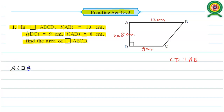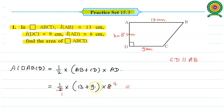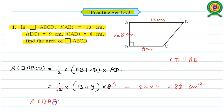So we may have: area of trapezium ABCD equals half times sum of its parallel sides, that means AB plus CD, whole into height AD. Replacing by their values: AB is 13, CD is 9, whole into AD is 8. So 13 plus 9 equals 22, and 22 into 4 equals 88. Since all dimensions are in centimetres, area of given quadrilateral ABCD equals 88 cm².